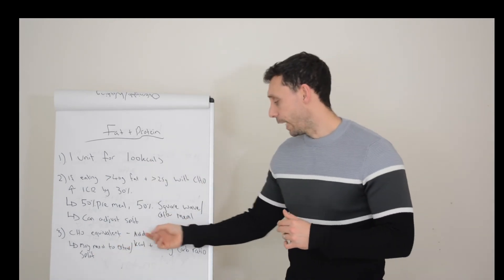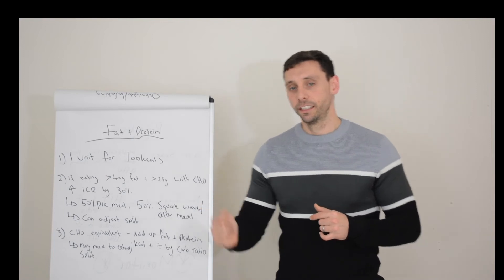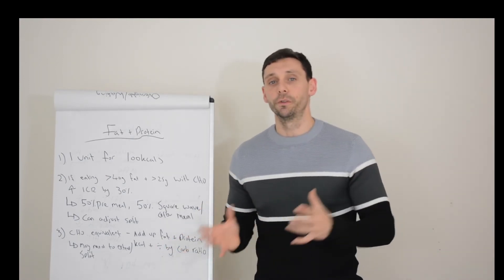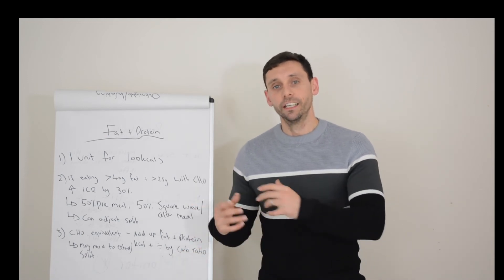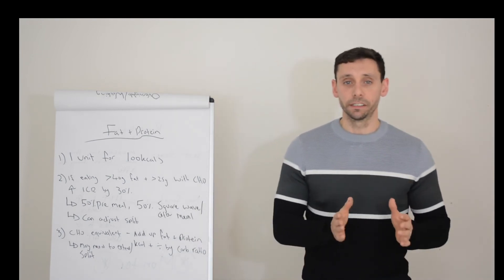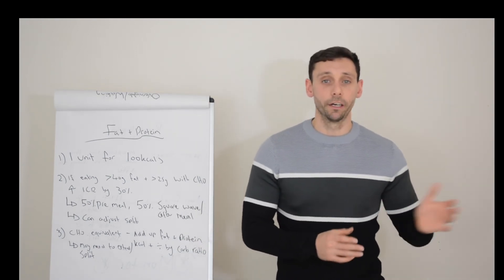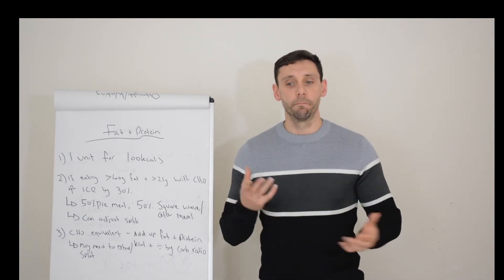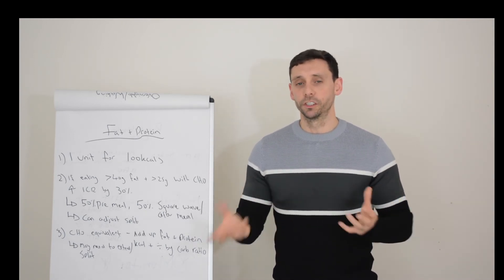So the idea is that you add up your fat and protein calories and then you divide that by your carbohydrate ratio. And that gives you the amount of insulin you should take to compensate for the additional fat and protein. You'll probably need to administer that as a split dose. So a bit at the beginning of the meal and a bit afterwards, probably 50-50 to start. But like I say, find what works for you in terms of the split.